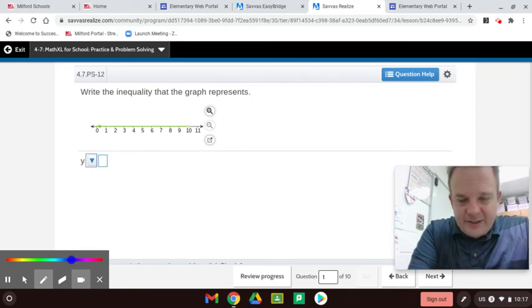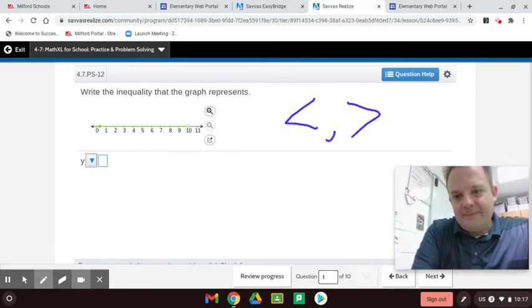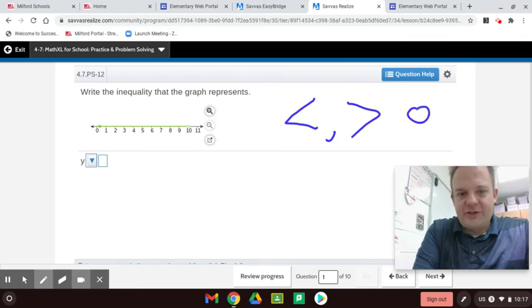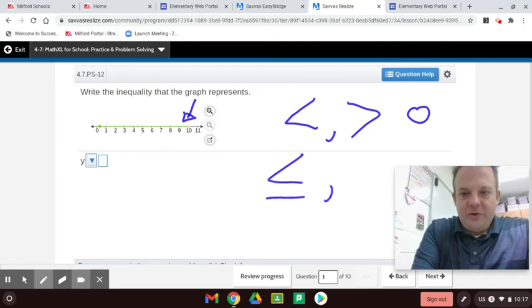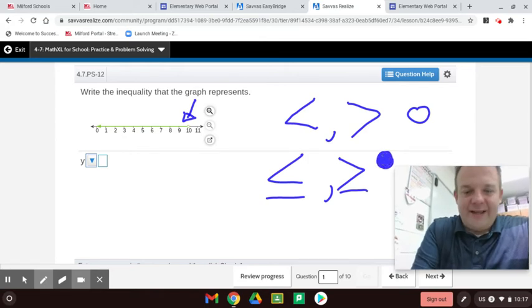Now, I want you guys to write this down. Less than, greater than, uses an open circle. This right here, that is an open circle. Less than or equal to, greater than or equal to, that uses a closed circle. That is a closed circle. Write that key down.